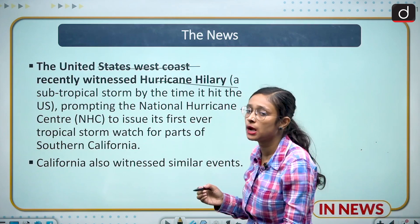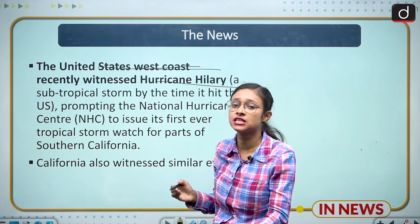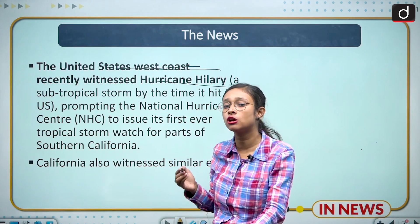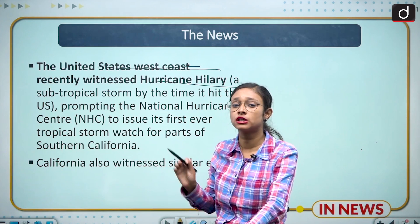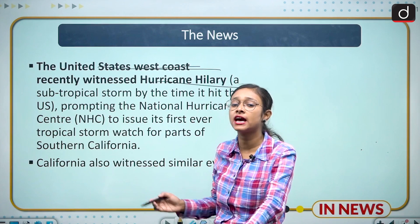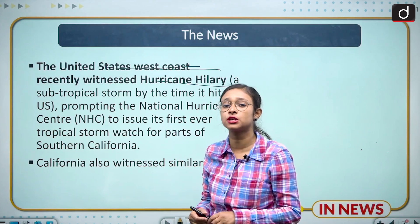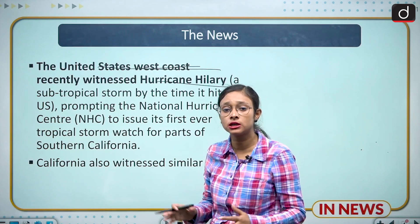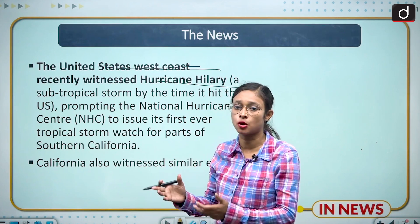Moving to the news: the west coast of the United States witnessed a hurricane, cyclone, or typhoon. The name of the typhoon is Hillary, and California also witnessed such events. Among all these storms, there were two kinds of storms which danced together, and that phenomenon is called the Fujiwara effect — that's why we are discussing this topic.